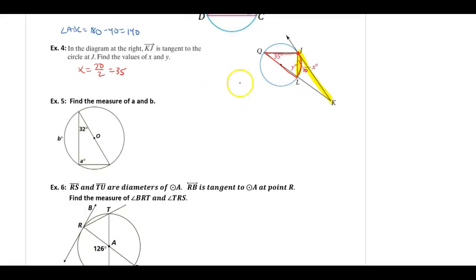To find Y, I need the measure of this arc because Y eats that arc. If this arc here is 70, what do these two arcs have to add up to? 180. So 180 minus 70 is 110, and now Y is 110 divided by 2, which is 55 degrees.